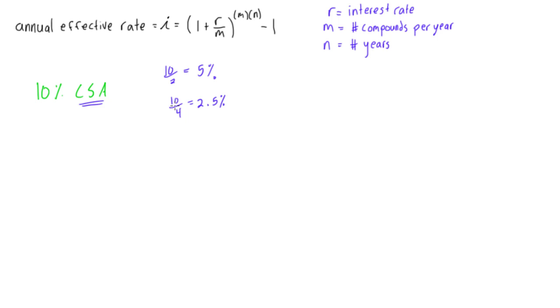Or if it was compounding quarterly, it's going to be a 4. And then up here we just have M times N. What we're doing is we're just going to do this for one year to find the annual effective rate.